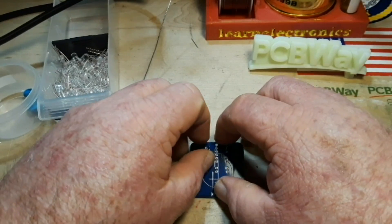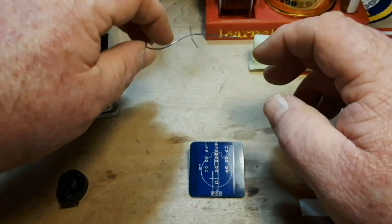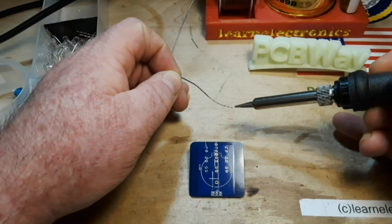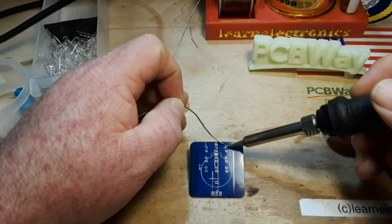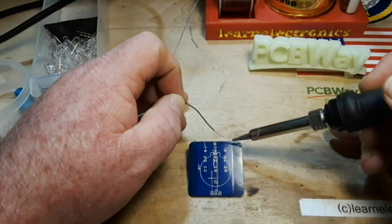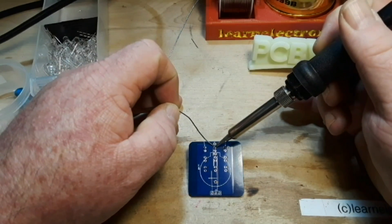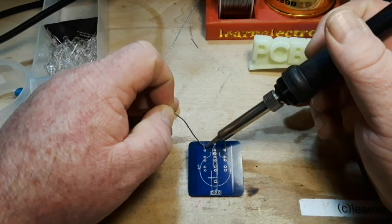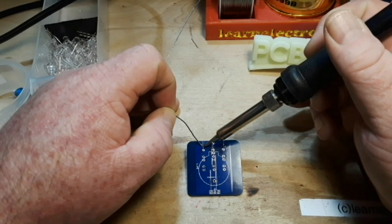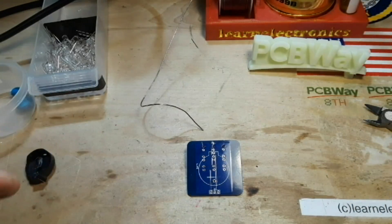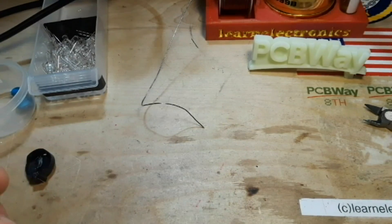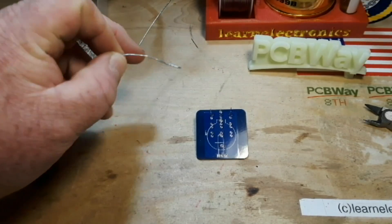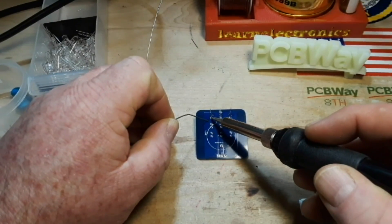So now we're going to get these soldered in. And I'm just going to do one leg of each one. And once those three are soldered in, I can flip the board over and have a look at it and make sure that they're all sitting properly. Then I can go back and solder in the bottoms.